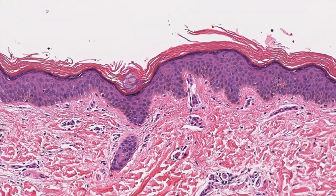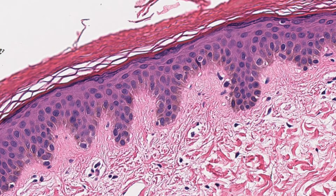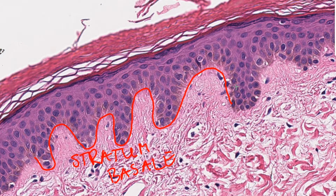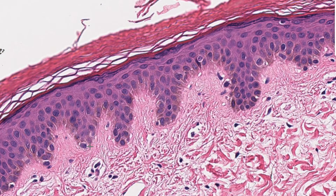The deepest layer of the epidermis is called the stratum basale. These cells lay on the so-called basement membrane — the line I just drew represents the basement membrane. This layer is just one cell deep, so we're only considering this first layer of cells sitting here.